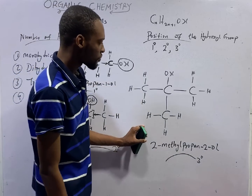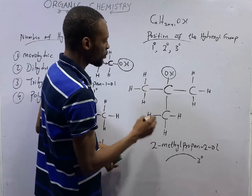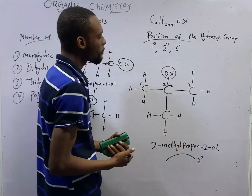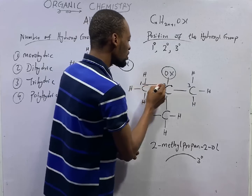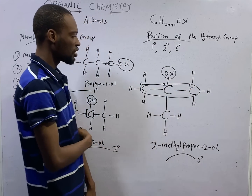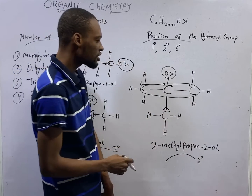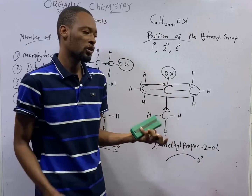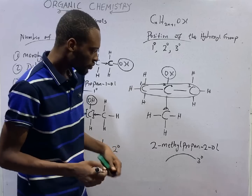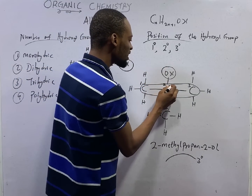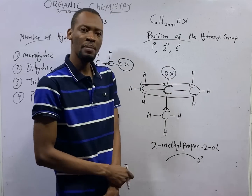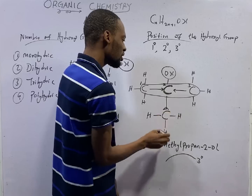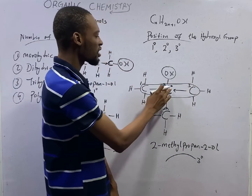Now look at this — this is the functional group. Count from here: one, two, three. The OH group is on carbon 2, so it is 2-ol. The longest chain is prop. We have a methyl branch on carbon 2. This is simply 2-methylpropan-2-ol. Now look at the carbon attached to the OH group — how many other carbon atoms are directly linked to it? We have this carbon, this other carbon, and this carbon. This is a tertiary carbon. Therefore, this is a tertiary alcohol.